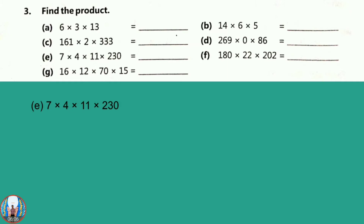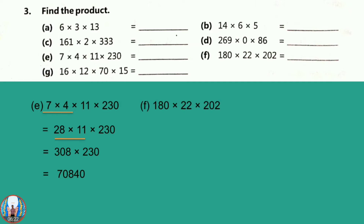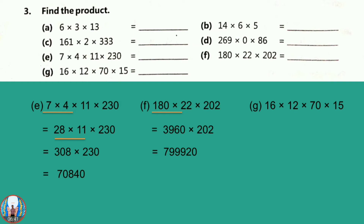Question number E: 7 into 4 into 11 into 230. First of all we will multiply 7 into 4, that is 28. Now 28 into 11, that is 308. Now 308 into 230 gives 70,840. Question number F: 118 into 22 into 202. 118 into 22 is 2,596, and 2,596 into 202 gives 5,24,392. Question number G: 1616 into 12 into 70 into 15. 16 into 12 is 192, 192 into 70 is 13,440, and 13,440 into 15 is 2,01,600.